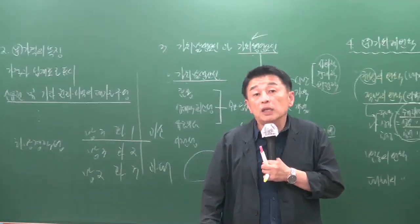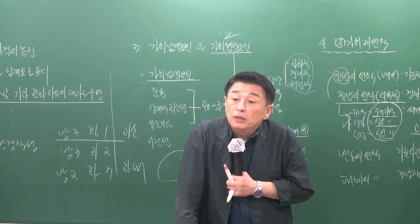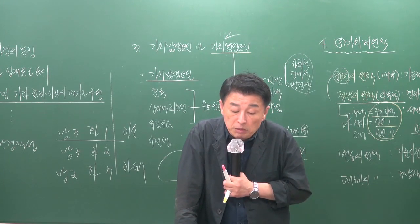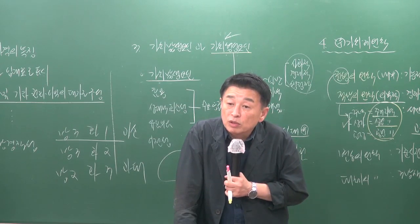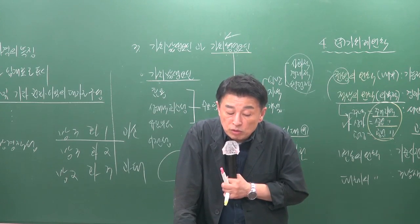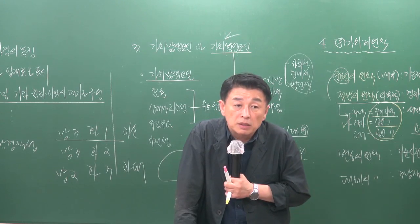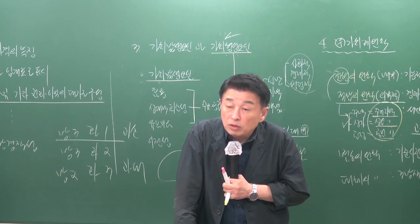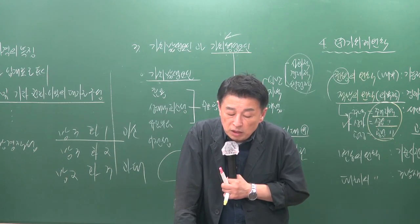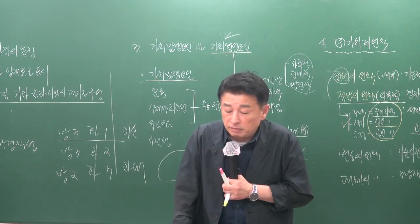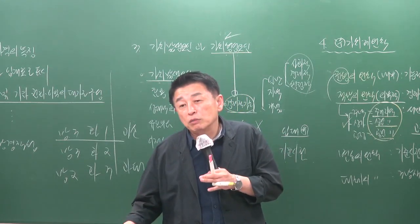실전에서는 문제가 비교적 간단하게 출제됩니다. 11번 문제에서 지역 분석과 개별 분석에 관한 설명으로 틀린 것을 물었을 때, 4번 보기에서 지역 분석보다 개별 분석을 먼저 실시하는 것이 일반적이라는 것은 틀린 설명입니다. 12번 문제에서 1번 보기의 지역 분석에서 인근 지역뿐만 아니라 유사 지역까지 분석하여 대상부동산의 구체적인 가격을 산정한다는 것도 틀렸으며, 가격 수준을 산정하는 것이 맞습니다.